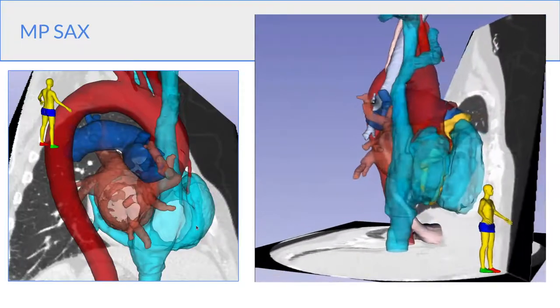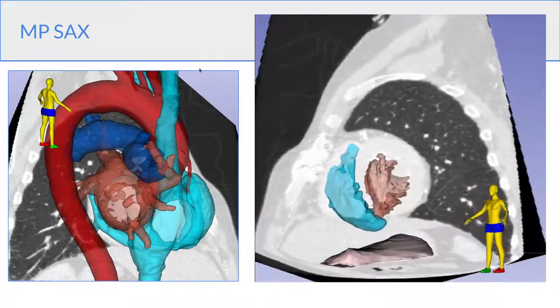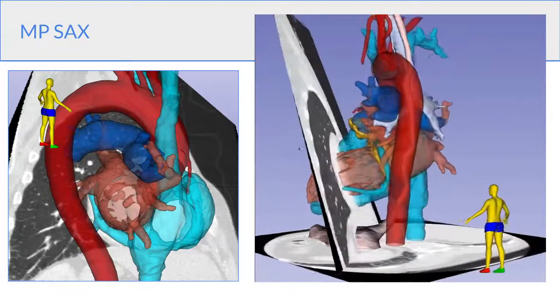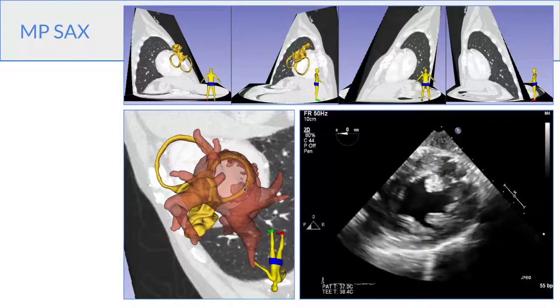So in transesophageal echo, our main window onto this view is the transgastric mid-papillary short axis. So here we have the same view now with all the cardiac structures, and an on-FAST view corresponding to your transgastric short axis view. And here again, the slice represented at the top, the on-FAST view at the bottom, and the echo clip.